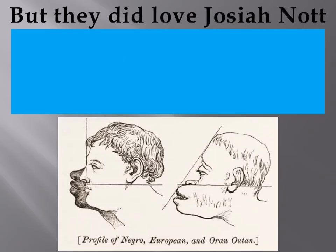But they did love Josiah Nott, who traveled around the South giving lectures on the separate nature of Africans and African-Americans. Nott's research was used as scientific justification for the Southern institution of slavery. Nott and Agassiz asserted that facial prognathism is a clear indicator of evolutionary stage, assuming most Africans had a large degree of facial prognathism — which is problematic since you can only determine so much from skull measurements given variation in flesh deposition on the face.